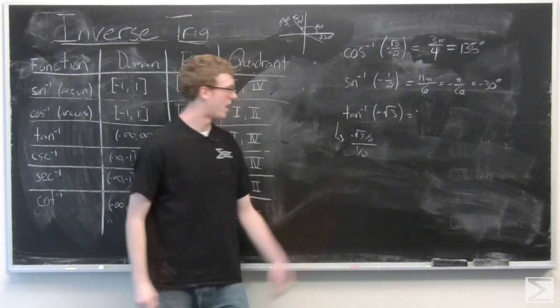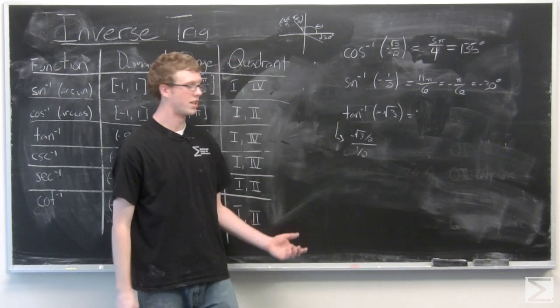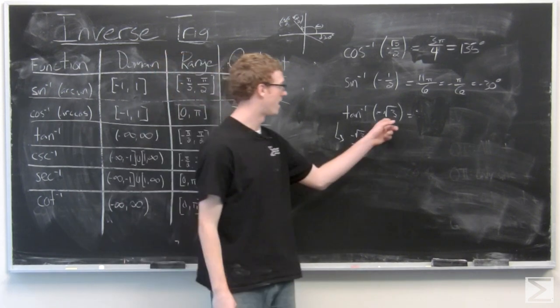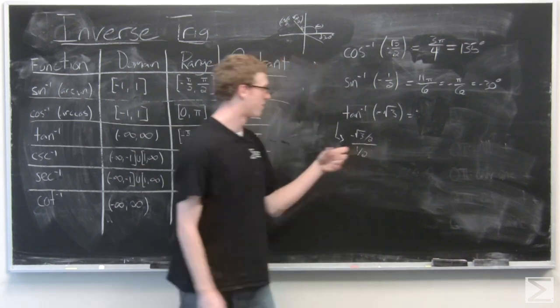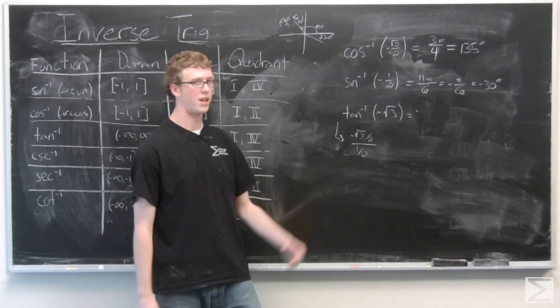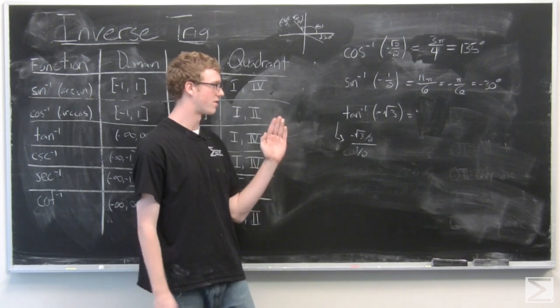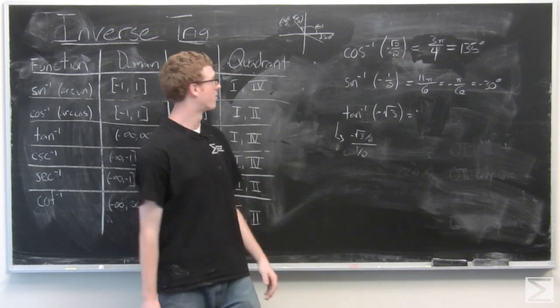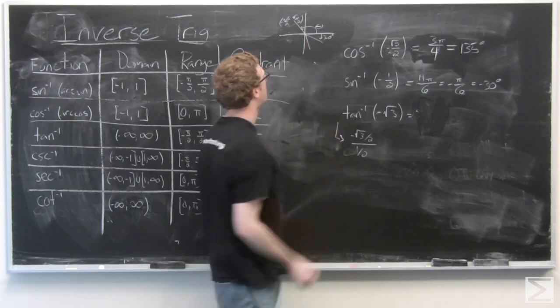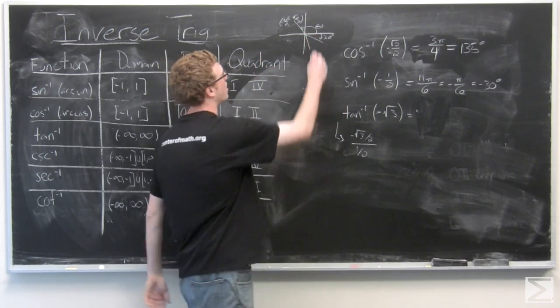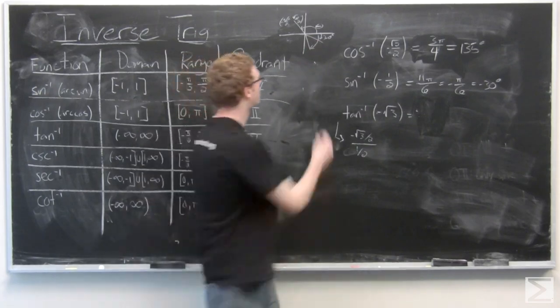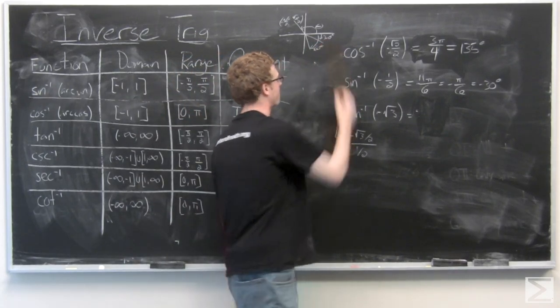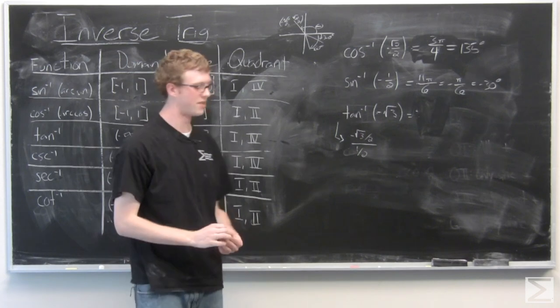Now these are the coordinates that are going to give us negative root 3 for tangent, which is negative root 3 over 2 comma 1 half, which corresponds to the angle that's 30 degrees from the negative y axis. Or that angle right there. We can drop this all the way down. That's a 60 degree angle.